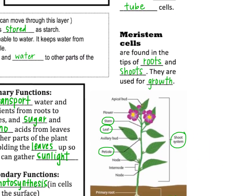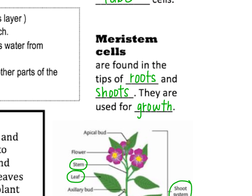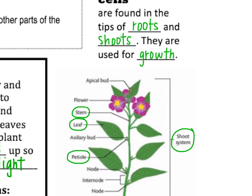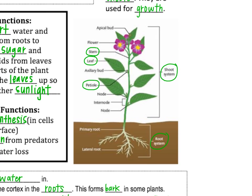Meristem cells are special cells used for growth. They're found in the tips of roots and shoots — so when you hear meristem, think growth. The stem part with all the leaves and flowers above ground is called the shoot system, and below ground you have the root system. So meristem growth happens at both the top and bottom of the plant. One thing to note: the stem of a leaf has a special name — a petiole. So the main stem of the plant branches off, and each little stem connecting a leaf is called a petiole.